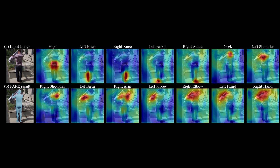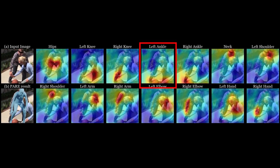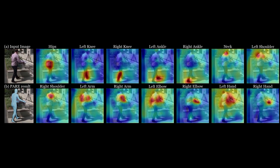Attention maps obtained from PEAR show that our model learns to attend to meaningful regions in order to infer occluded body parts. As an example, for the occluded right hand in this image, PEAR has learned to attend to the shoulders and left arm. In another example, the left ankle attention map looks at the right ankle. For this image, the occluded left elbow and left hand are inferred by looking at the right arm.